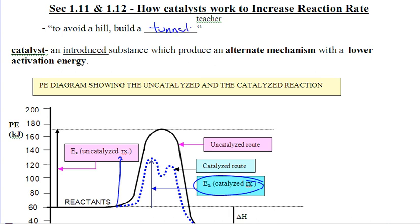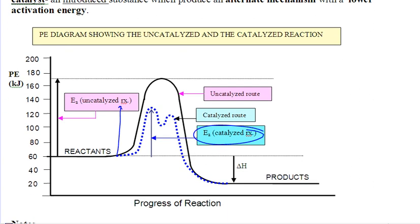That's the idea of a catalyst. You laugh now, but that's how it works. To avoid a hill, build a tunnel. So let's have a look at the potential energy diagram. The black line, a single step reaction. The EA goes from the reactants to the top of the peak, like this black bold arrow here. That is uncatalyzed.